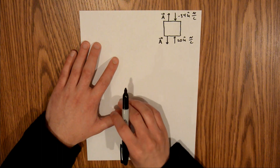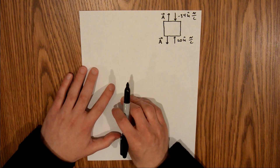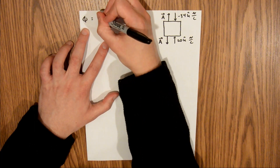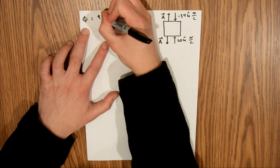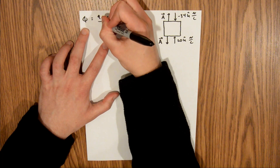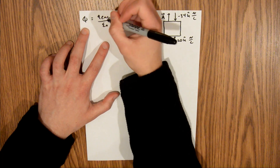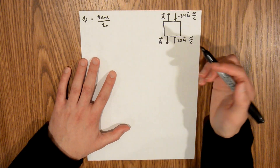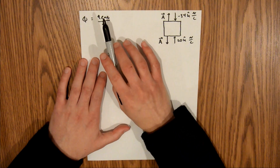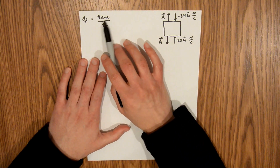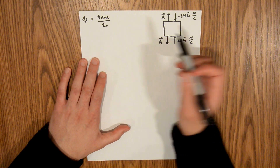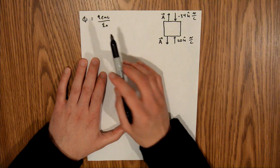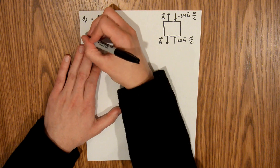That is the setup for this problem. We know that flux is equal to the charge enclosed over epsilon naught, where epsilon naught is our vacuum permittivity constant. In this problem we are looking for the charge contained within the cube, which is Q enclosed, so we can multiply both sides by epsilon naught to isolate our charge enclosed.